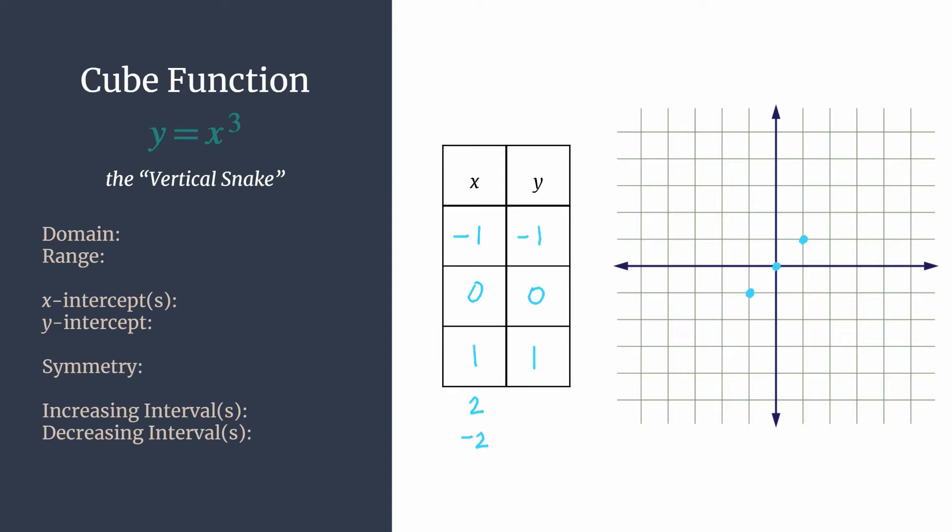So 2 cubed, or 2 times 2 times 2, is 8. And thus negative 2 cubed must be negative 8.